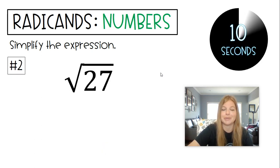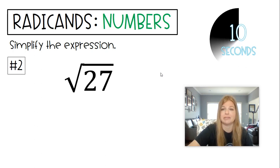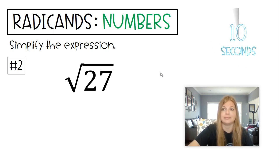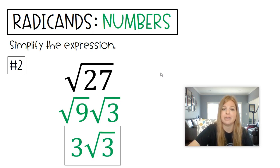Ready? Radical 27. Thinking — what's the biggest perfect square that goes into 27? Hopefully we knew that it was 9. So Radical 9 times Radical 3 is how you'd break apart Radical 27. Square root of 9 is 3, and then you would just leave Radical 3.